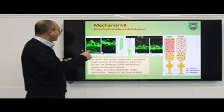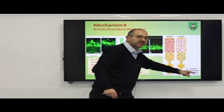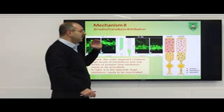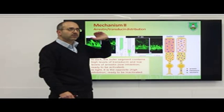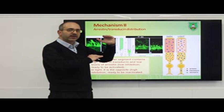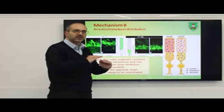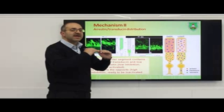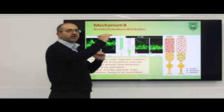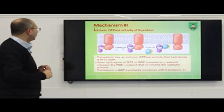Mechanism number two is the translocation of two proteins: arrestin and transducin. In the dark, transducin exists on the cell membrane while arrestin exists in the cell body. When the signal is activated, transducin moves inside the cell to terminate the signal, and arrestin moves outside, increasing its presence to bind rhodopsin and inactivate the signal.